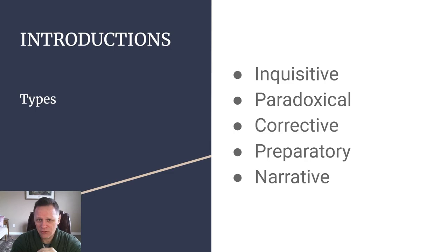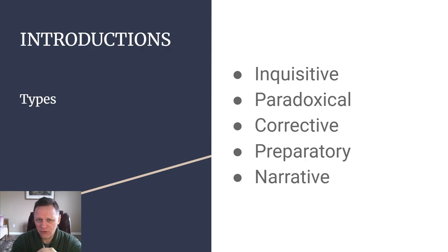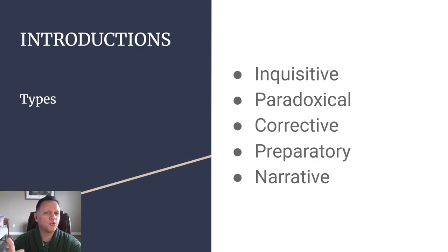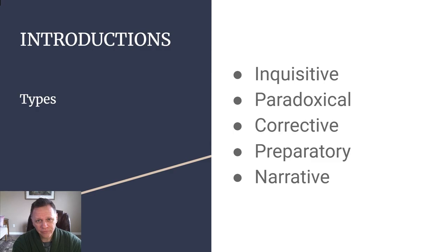Now let's talk about the different types of introductions. This is not an exhaustive list, but it's great for novice and established writers alike. I'm taking this list from Classical Rhetoric for the Modern Student by Edward P.J. Corbett and Robert J. Connors — fourth edition, a great resource I highly recommend. The five introductory types are: inquisitive, paradoxical, corrective, preparatory, and narrative.